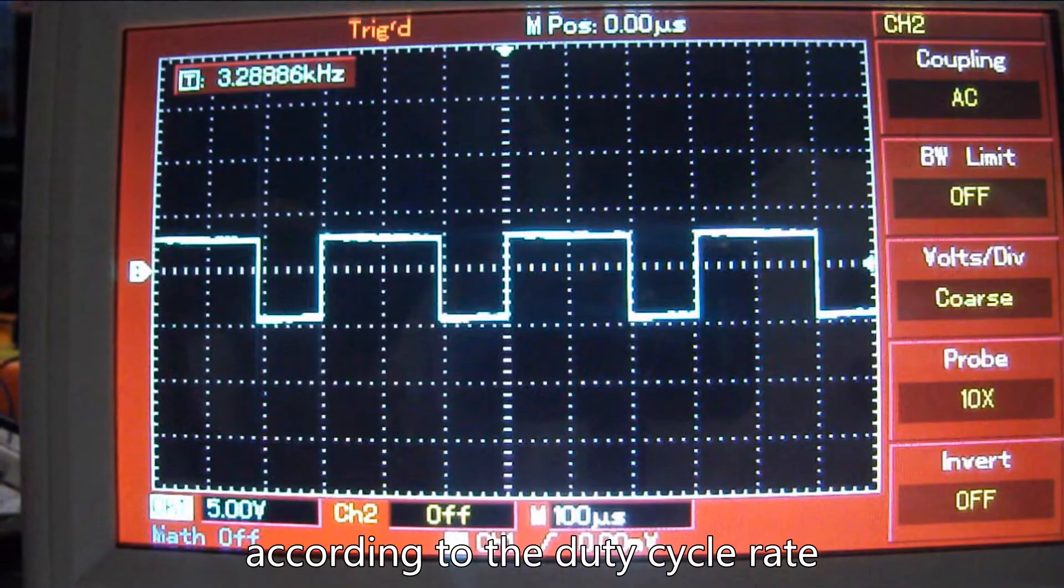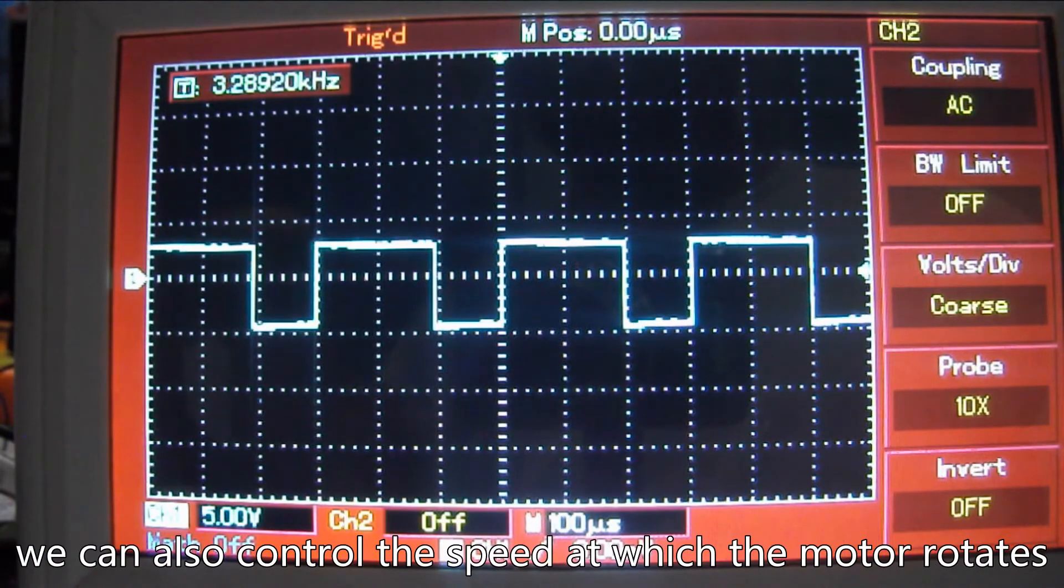According to the duty cycle rate of the PWM signals, we can also control the speed at which the motor rotates.